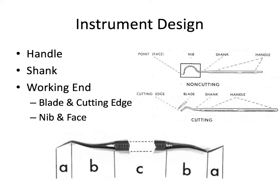Dental hand instruments have three main regions. The handle, represented by the letter C, is usually about six millimeters in diameter. It can be eight-sided or round, and sometimes has a ribbed grip or can be smooth and flat. The shank, represented by the letter B, may have one or more bends in it — you can see one bend here and another here — and that allows the working end to be aligned with the long axis of the handle.